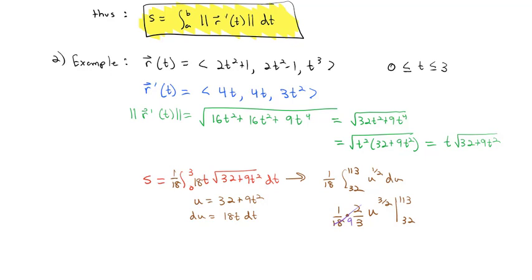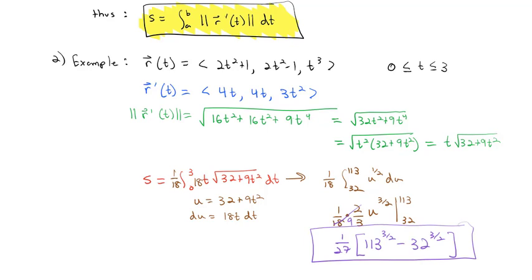2 over 18 reduces to 1/9, so we're going to have 1/27 times the result. We'll leave it as 113^(3/2) minus 32^(3/2). That's an ugly decimal, so we'll call that good for the arc length of our vector-valued function. Using our formula, arc length is simply the integral of the magnitude of the derivative of the original vector-valued function.